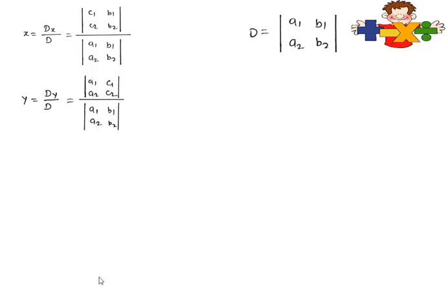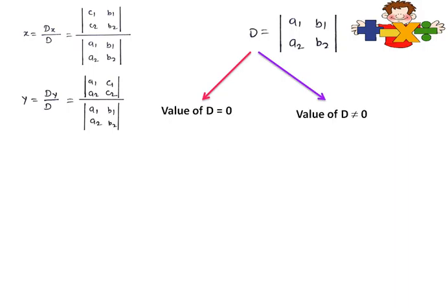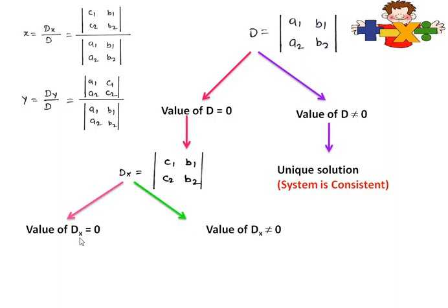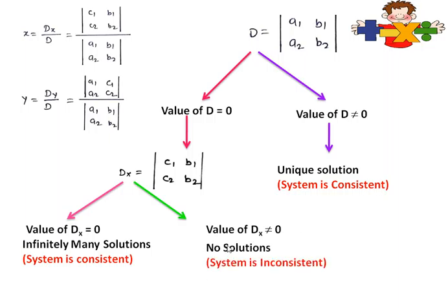We obtained x from Cramer's rule as Dx/D. Now regarding D: the conditions we derived depend on the value of D, which is the determinant of a1, a2, b1, b2. Two conditions arise: D ≠ 0 gives a unique solution, and D = 0 leads to further analysis of Dx, whose value is the determinant of c1, c2, b1, b2. If D = 0, we check Dx: if Dx = 0 we get infinitely many solutions and the system is consistent; if Dx ≠ 0 there is no solution and the system is inconsistent.